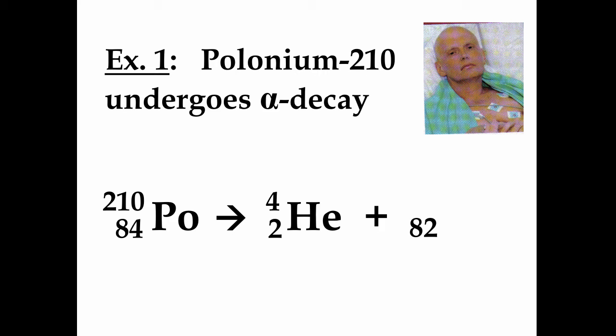And if four nuclear particles are emitted from the nucleus, which originally contained 210 nuclear particles, that leaves 206. And if we look on the periodic table, the element with atomic number 82 is lead. So this is a balanced nuclear equation for the alpha decay of polonium-210.